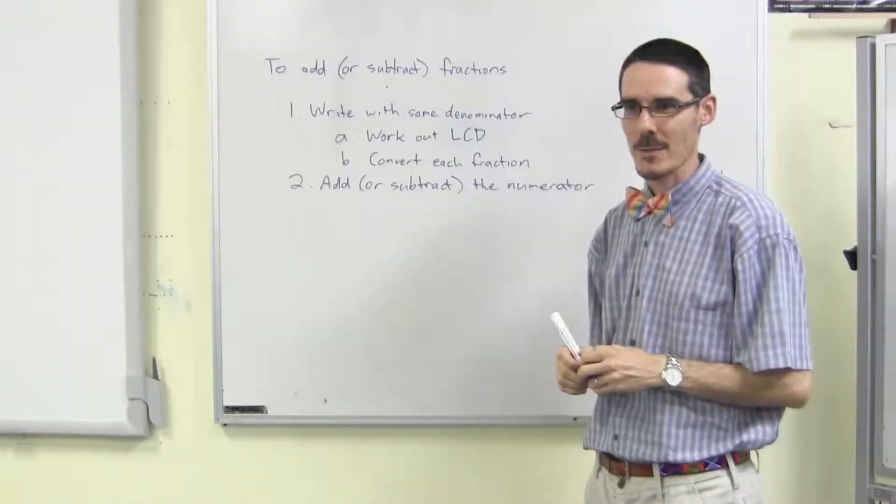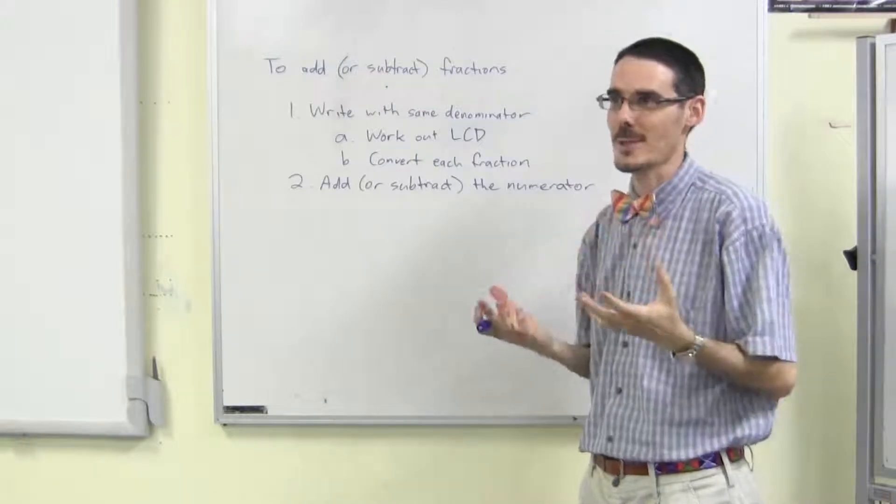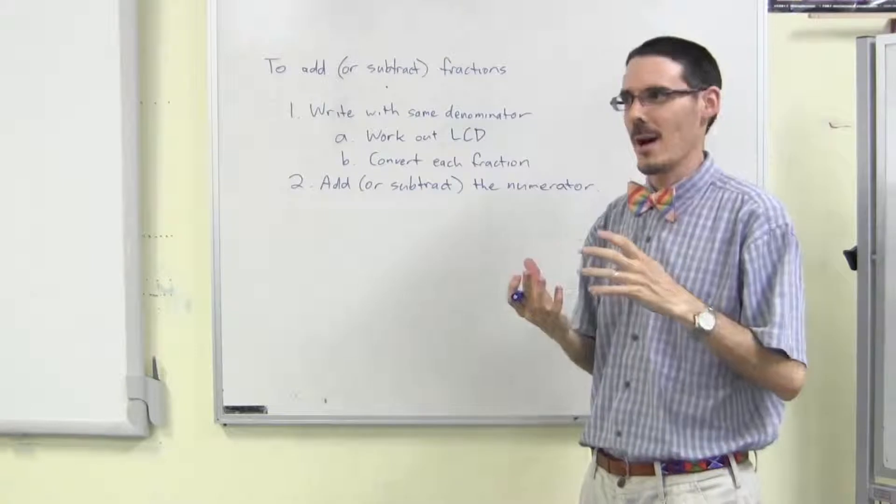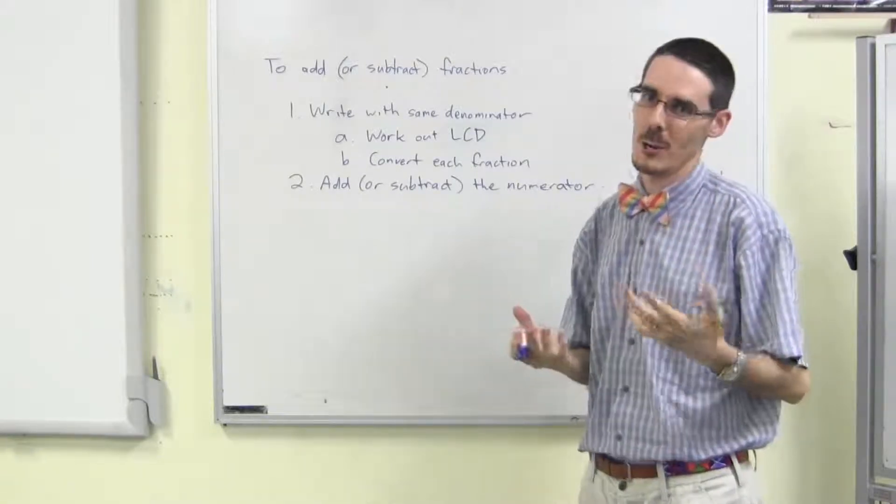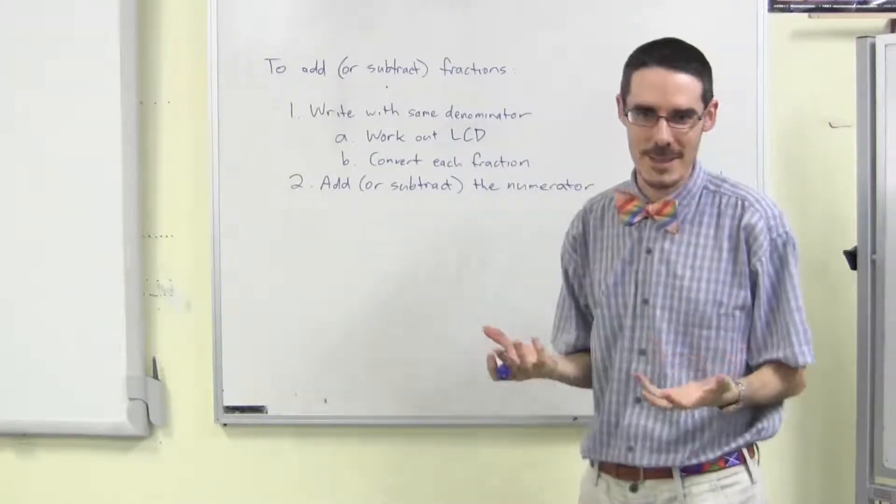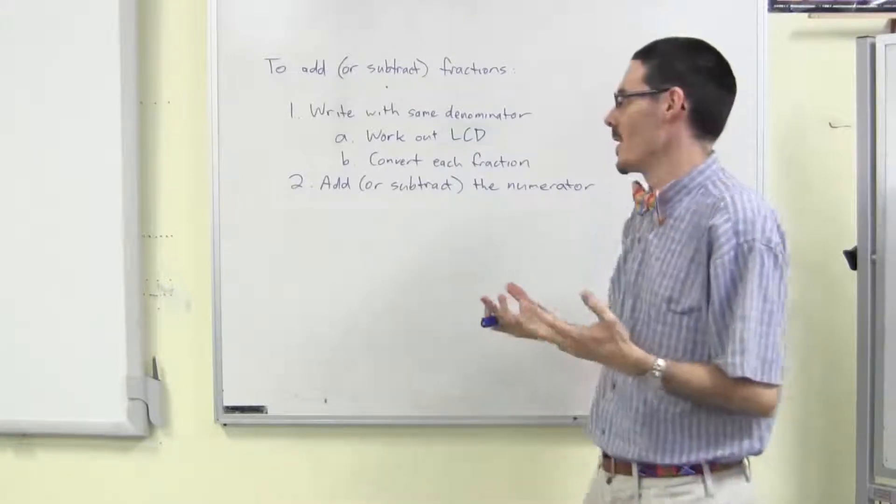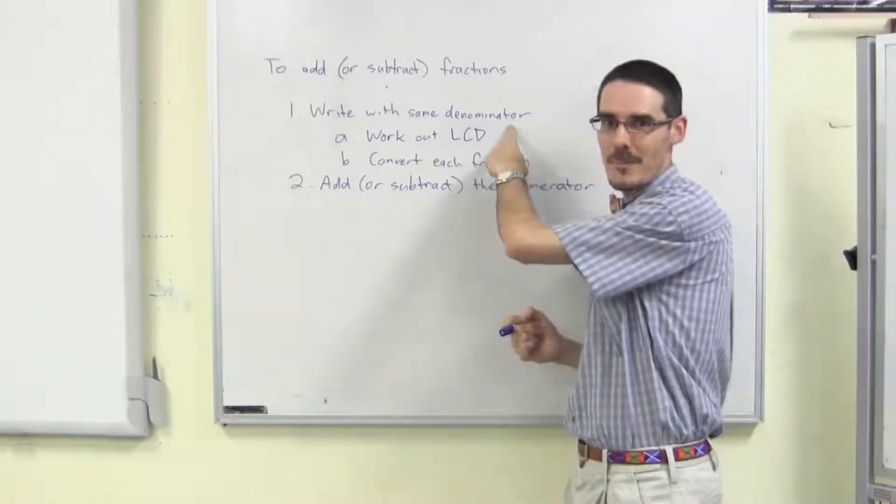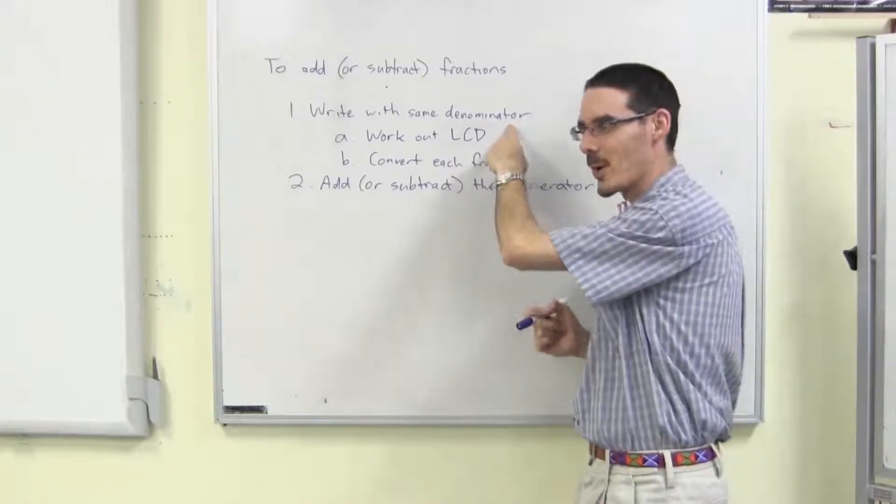To add or subtract fractions, we need to have the two fractions we're adding or subtracting being the same kind of fraction. I have to add halves to halves, quarters to quarters, seventeenths to seventeenths. That means to say, I have to write them with the same denominator, the same number on the bottom of the fraction.